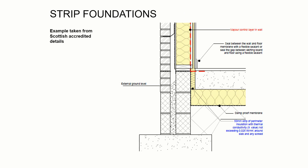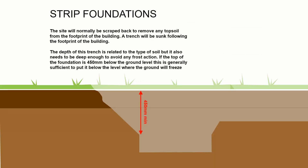Today we'll be looking at a strip foundation and the ground-bearing floor example of how to construct this. As discussed in previous lectures, we scrape back the site and remove material — it's no different for foundations. We don't want any material underneath the foundations that could rot or cause voids, so we need to get down below the topsoil level.